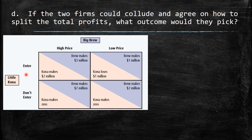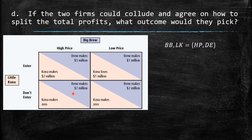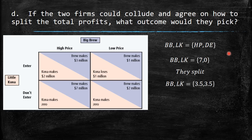If the two firms could collude and split the total profit, they'd choose Big Brew high price and Little Kona stays out, generating total profit of 7 million. Splitting it equally gives each firm 3.5 million — better than the Nash equilibrium outcome of 3 and 2 million.